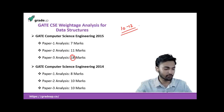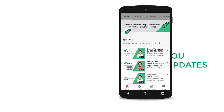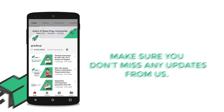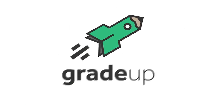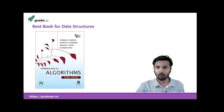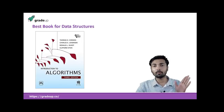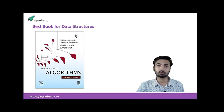Please subscribe to our channel and press the bell icon to never miss any update. The best book for data structures is the same as for algorithms — Cormen. This book, whose full name is 'Introduction to Algorithms,' covers all the concepts in data structures as well.